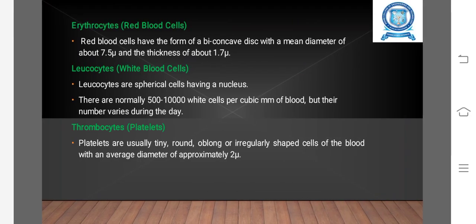Leukocytes (white blood cells) are spherical cells having a nucleus. There are normally 5,000-10,000 white cells per cubic millimeter of blood, but their number varies during the day.